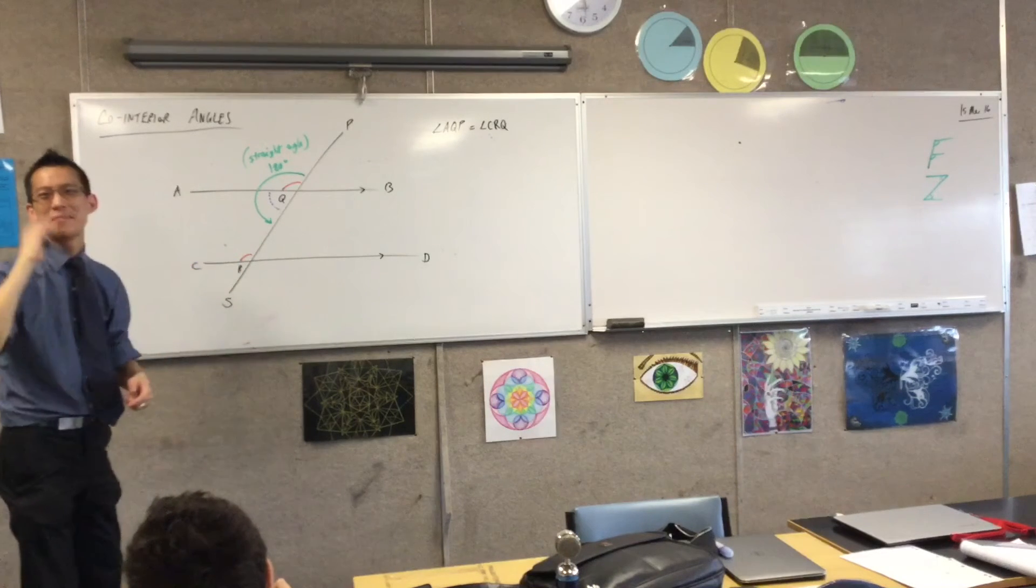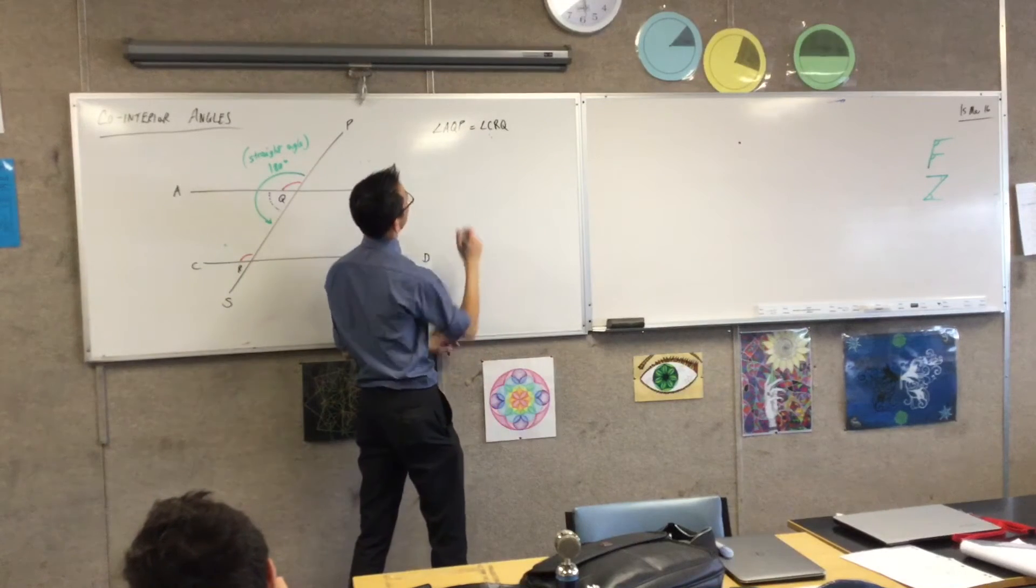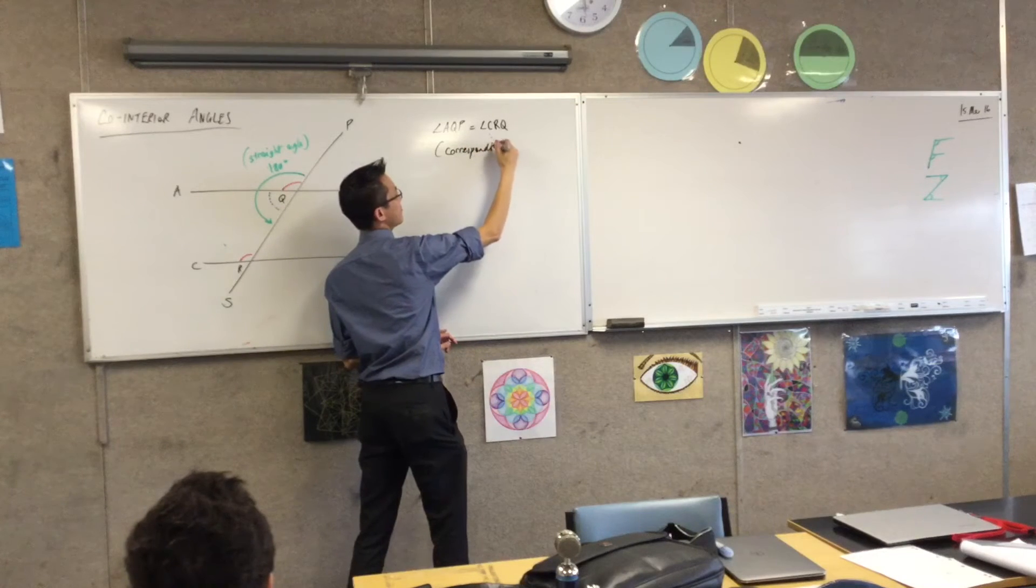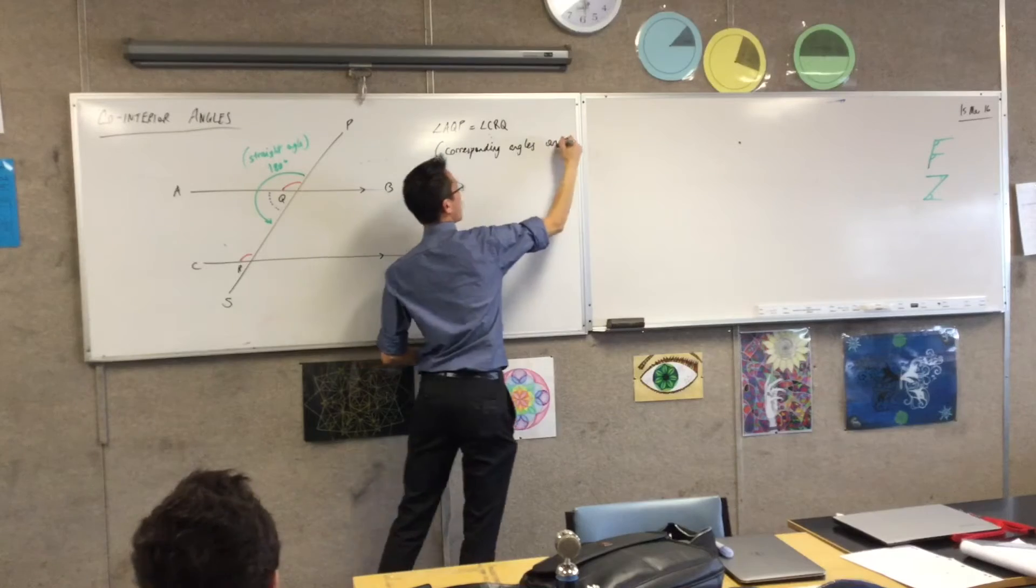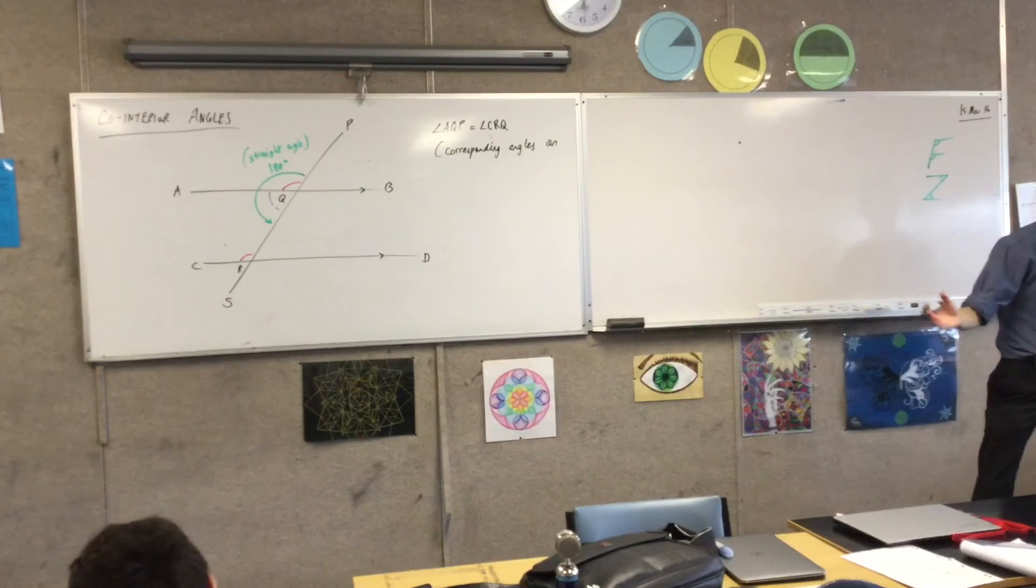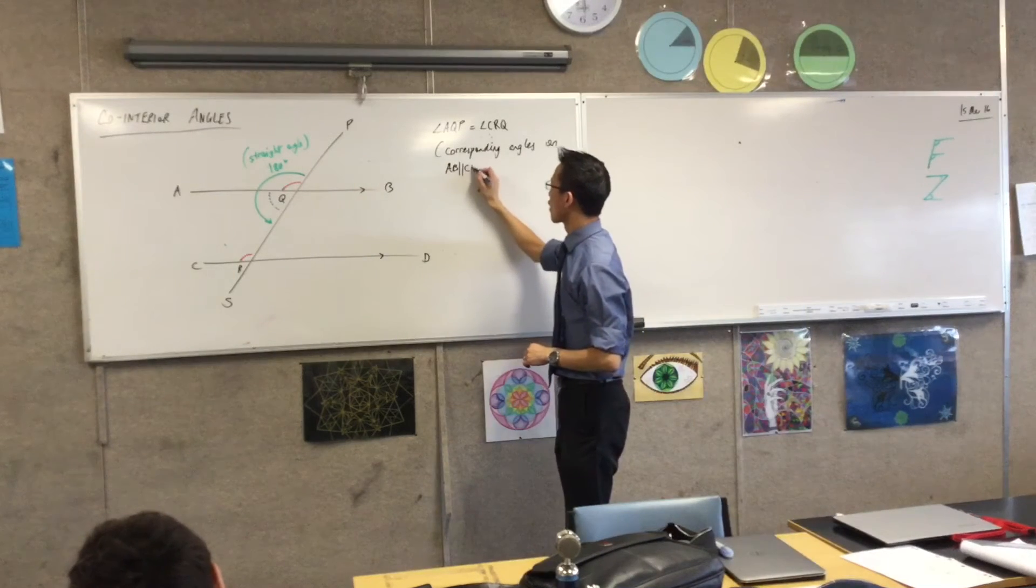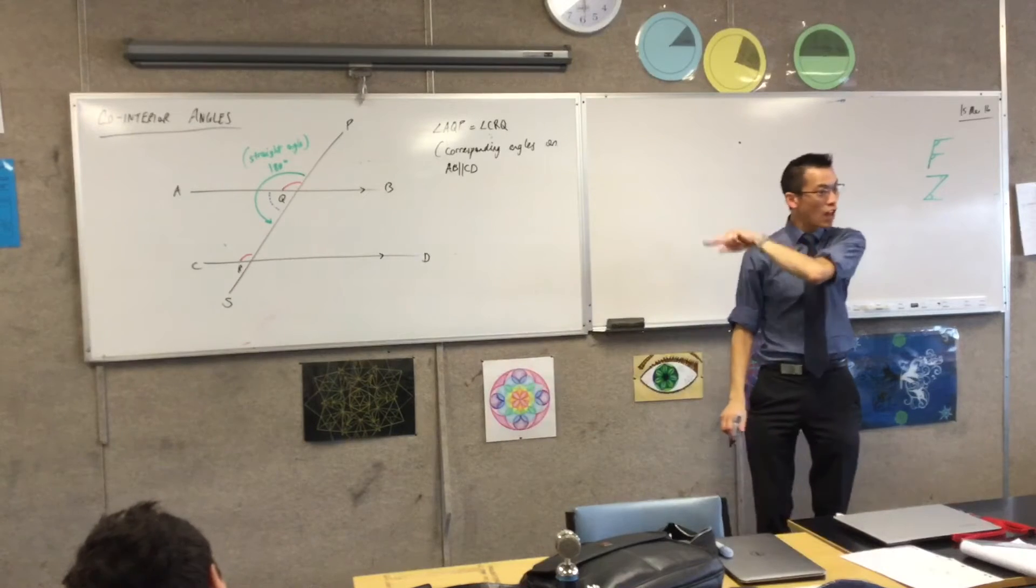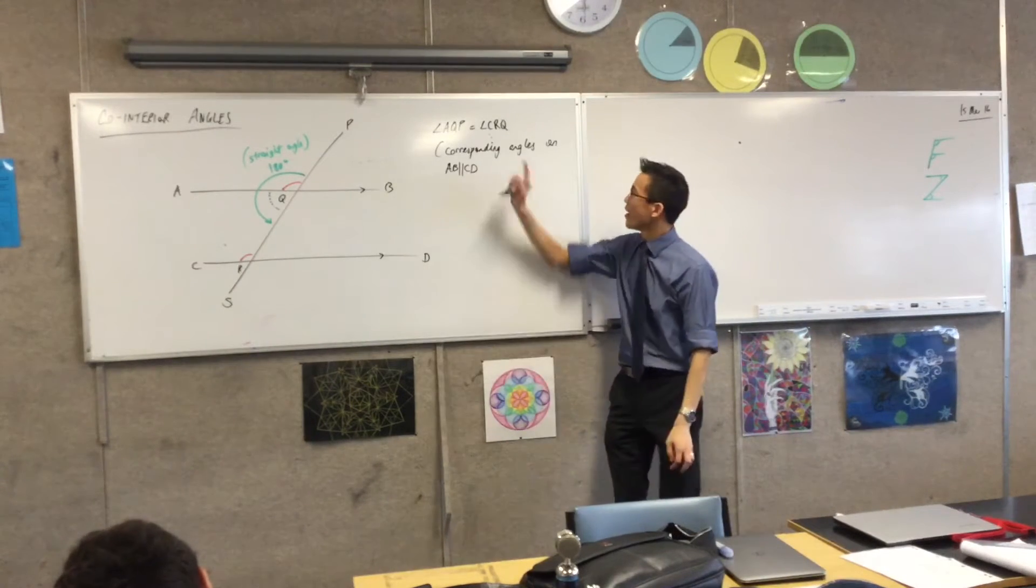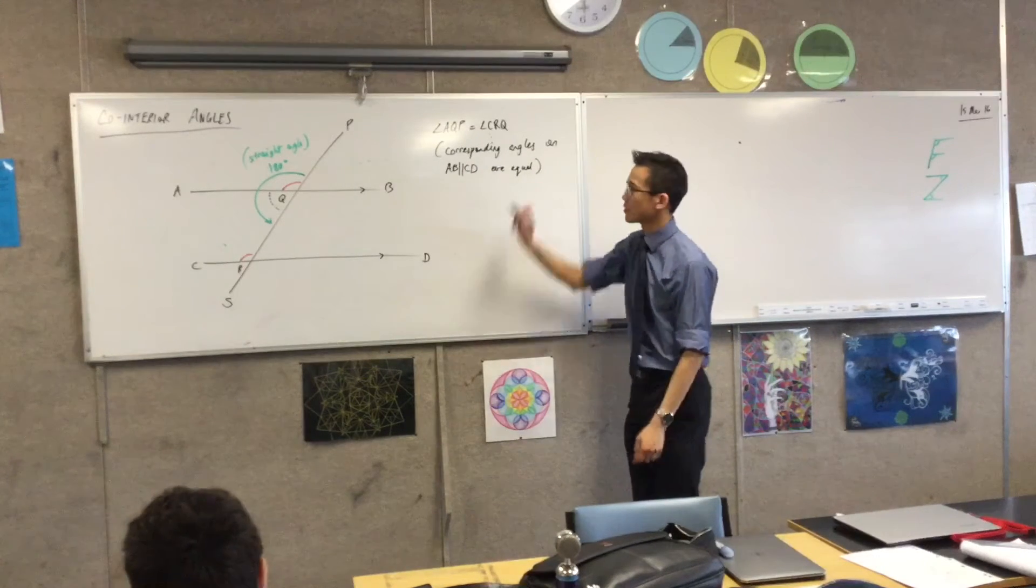Very good. We got there, okay? It was on the tip of your tongue, right? They're corresponding angles. So let's give the reason here, okay? I'm going to put mine underneath because I've run out of a bit of space here. Corresponding angles on, what are they called again? These two lines? I've given them names. A, B, and C, D. So I'm going to say, corresponding angles on these two lines, which are parallel, because there's my parallel line symbol. Corresponding angles on those are equal. That's good.